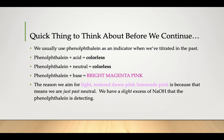We usually use phenolphthalein as an indicator when we've titrated in the past, and just a little brush up on the colors there. If you do phenolphthalein plus acid, it's going to be a colorless solution. Phenolphthalein plus neutral is also colorless, but you get a color change that happens when you put phenolphthalein in a base. That's when you get that bright magenta pink.